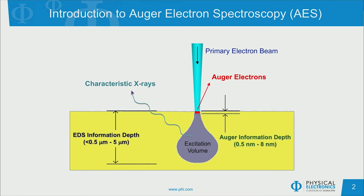As a quick introduction to Auger electron spectroscopy, we have a schematic shown here on the slide showing how we irradiate a sample with a primary electron beam. The excitation volume of that electron beam will penetrate into the sample on the order of a few microns. Within that excitation volume, there will be many interactions taking place, such as the emission of x-rays, secondary electrons, and Auger electrons. The characteristic x-rays, typically used for things like EDS analysis, can be emitted from deep in the sample. However, Auger electrons have an information depth of just a few nanometers, making it a very good technique for surface-sensitive analysis.